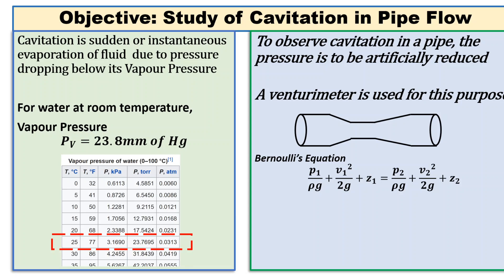Therefore, the pressure must decrease because the final summation of all the heads — pressure head, velocity head, and datum head — must remain constant. If the venturi meter is kept in a horizontal position, then z1 and z2, the datum heads on both sides, will be equal and cancel out.